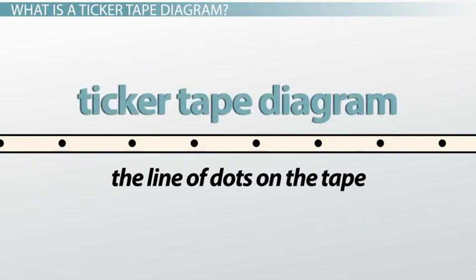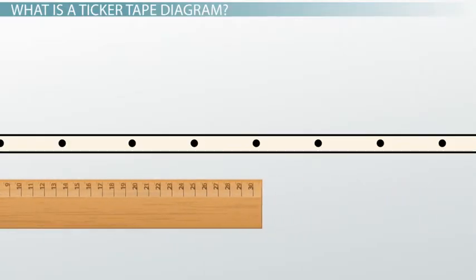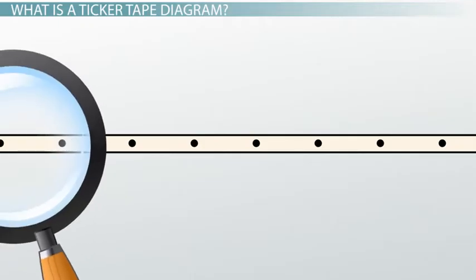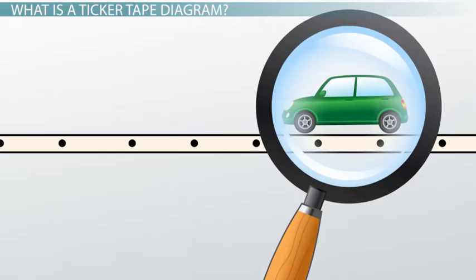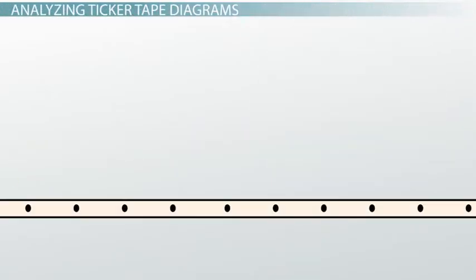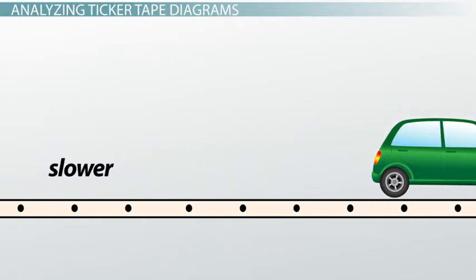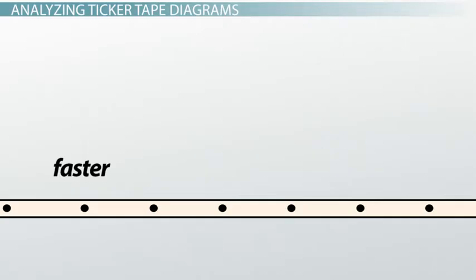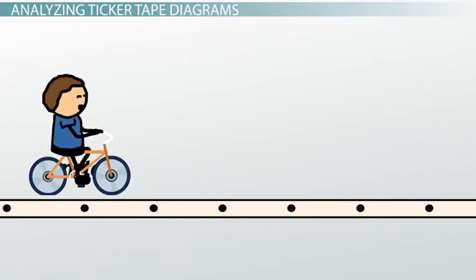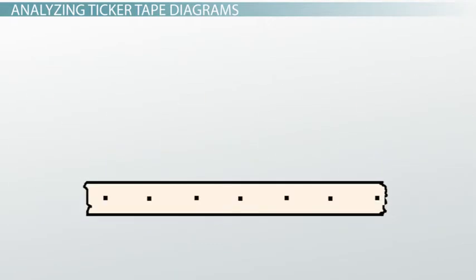You can measure the distances between the dots to see how far the object travelled during each 0.1 or 0.2 seconds. But you can also figure out the type of motion that occurred at a glance, if you know what to look for. The closer the dots are together on the tape, the slower the object moved. The further apart the dots are on the tape, the faster the object moved. But whatever the spacing may be, if the spacing isn't changing, that tells you that the object moved at a constant speed. A ticker tape diagram of this kind would look something like this.